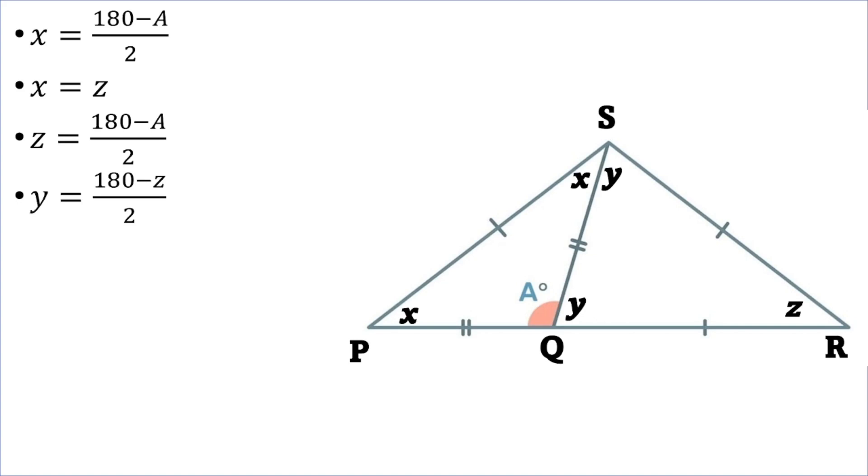And finally, if we look at the straight line PQR, angle A and angle Y are adjacent angles. So those add up to 180, or in other words, angle Y will be equal to 180 minus A.